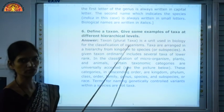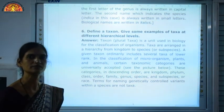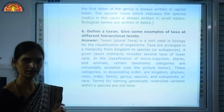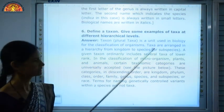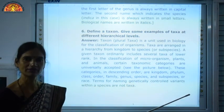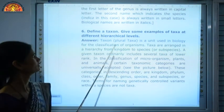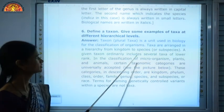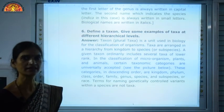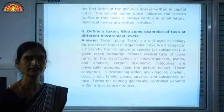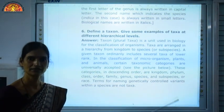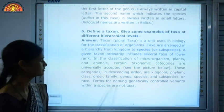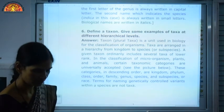Then, define a taxon. As we studied — kingdom, phylum, class, order, family, genus, species — these are all the categories we studied. Each level, each grouping made at each level, is a taxon. It is the unit of classification. Taxa are arranged in hierarchy. Hierarchy is the systematic arrangement of kingdom, phylum, class, order, family, genus, species — this whole arrangement is called hierarchy.